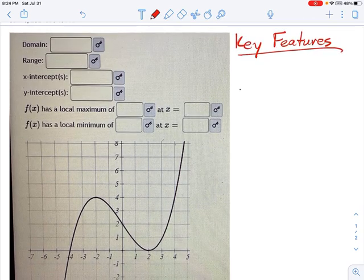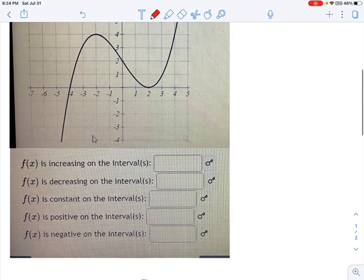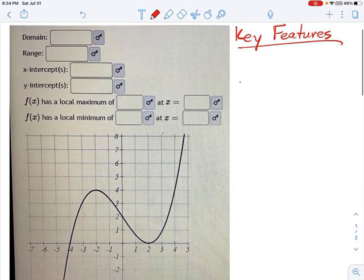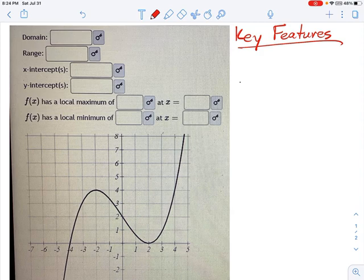Domain, range, intercepts, maximum, minimum, and all these increasing, decreasing things, which is no problem at all once you understand what these vocab words mean. But we might need a little practice at that, so let's go through it piece by piece here.